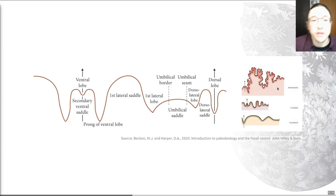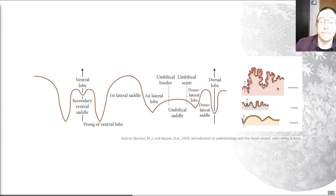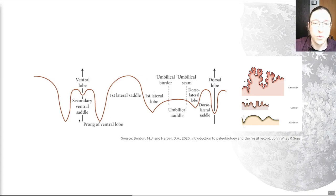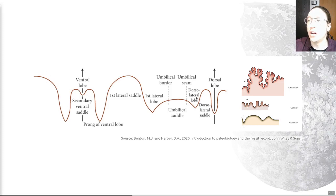Within the ammonoids, the septa are folded, presumably to give the organism and shell some strength. This gives rise to a complex pattern of frilled lobes and saddles on the sutures of derived forms. I wouldn't worry too much about the terminology of lobes or saddles specifically — just be aware that in these groups we can use the form of the suture line across the shell to understand something about the relationships within the group. It's very important for the taxonomy and phylogeny within the ammonoids.